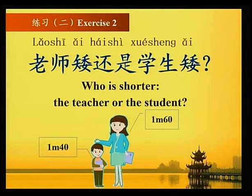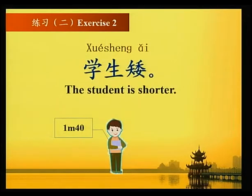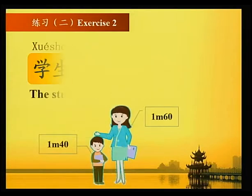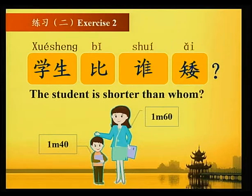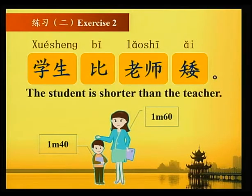老师矮还是学生矮？Who is shorter, the teacher or the student? 学生矮 — the student is shorter. 学生比老师矮 — the student is shorter than the teacher.